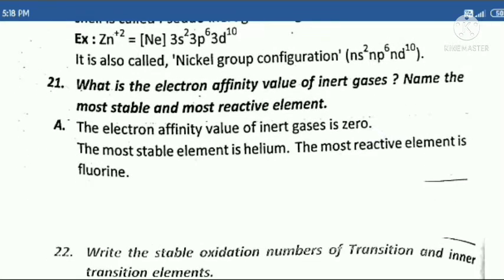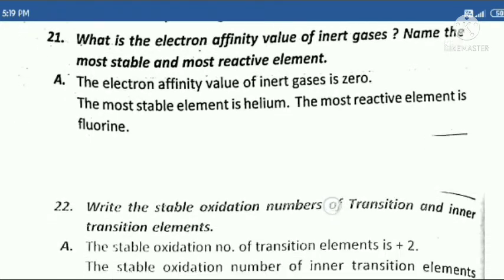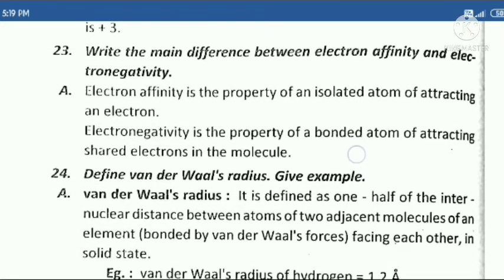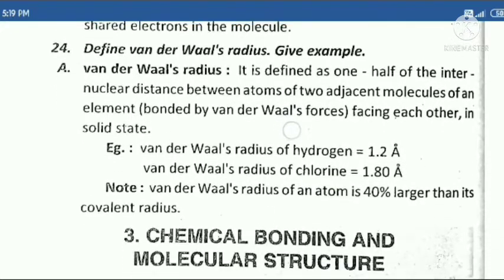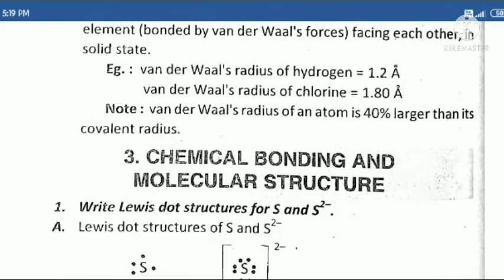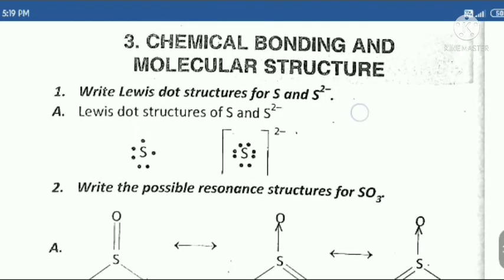Twenty-first question: What is the electron affinity value of inert gases? Name the most stable and most reactive element. Twenty-second question: Write the stable oxidation numbers of transition and inner transition elements. Twenty-third question: Write the main difference between electron affinity and electronegativity. Twenty-fourth question: Define van der Waals radius with an example.